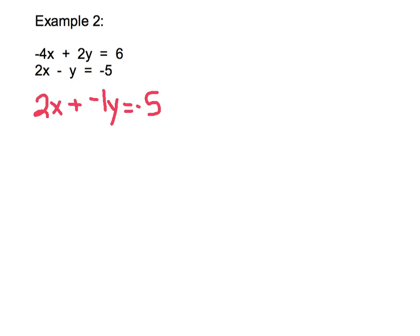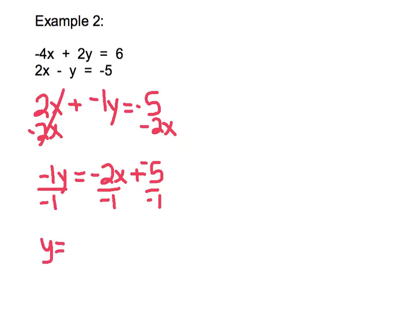I'm going to subtract 2x first on both sides. That'll cancel out the 2x's on the left, leaving me with negative 1y equals negative 2x plus negative 5. I still need to divide by negative 1, and that means each term will get divided by negative 1. Canceling out our negative 1's, and we will get y equals 2x plus 5.